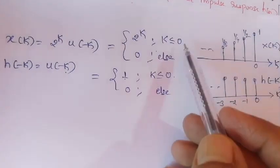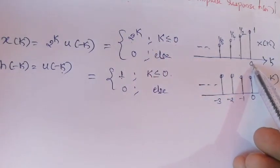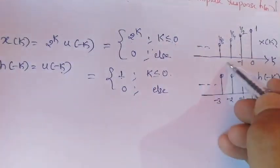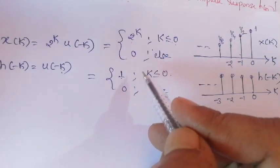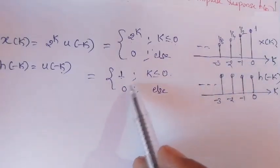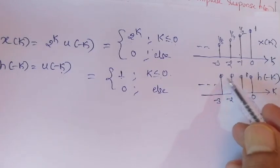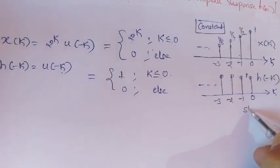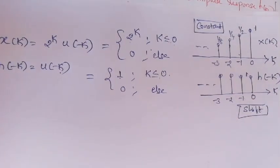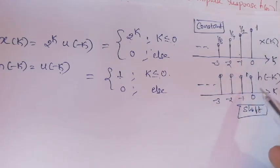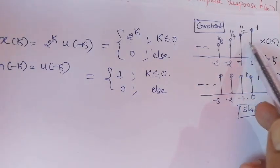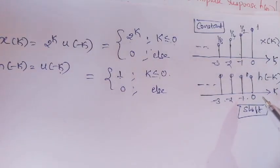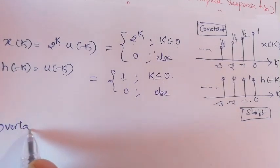Graphically: at k equals 0 the value is 1; at k equals minus 1 it is 1/2; at k equals minus 2 it is 1/4, and so on. For h(n minus k), the signal is constant at 1 for k less than or equal to zero, going to minus infinity. Both sequences have amplitude only for negative values, so there is always overlap. We check the overlap region between the two signals.